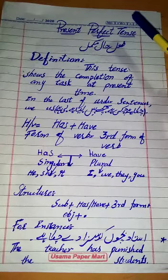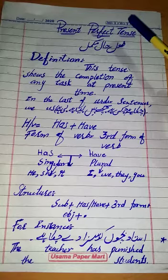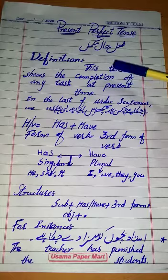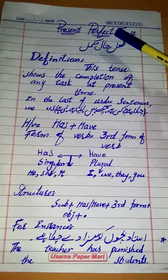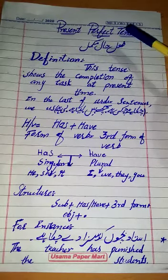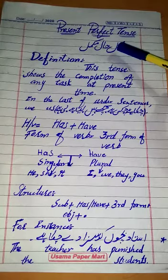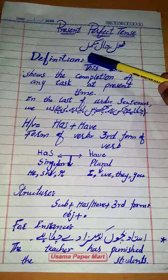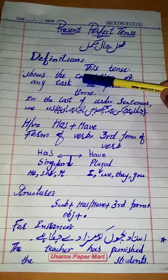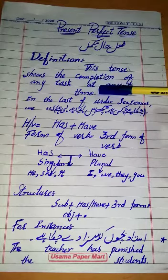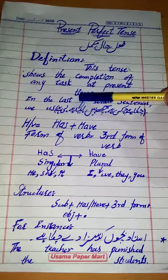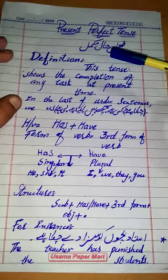Today we will discuss how we can use present perfect tense in our daily communication and how we can create sentences. The definition of present perfect tense — in Urdu it is called 'fail hal mukamal.' It means that in this tense the work has been completed. This tense shows the completion of any task at the present time.